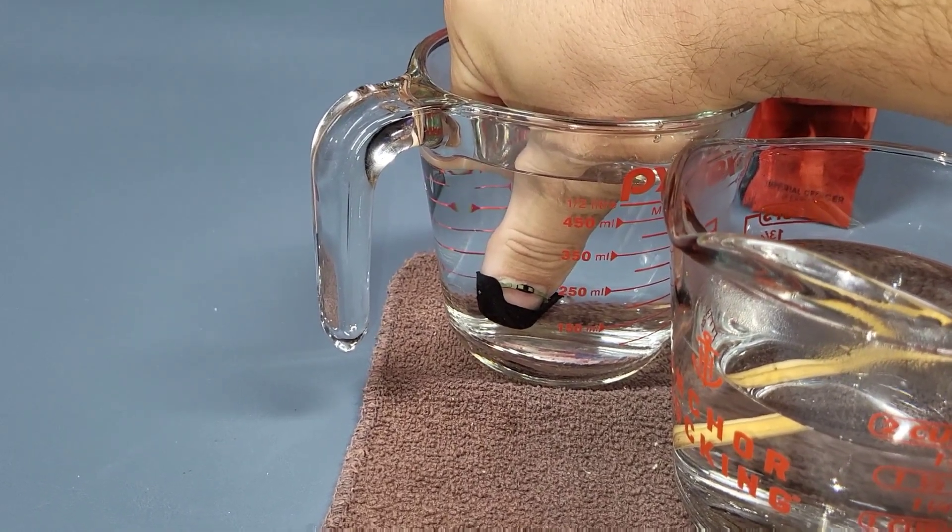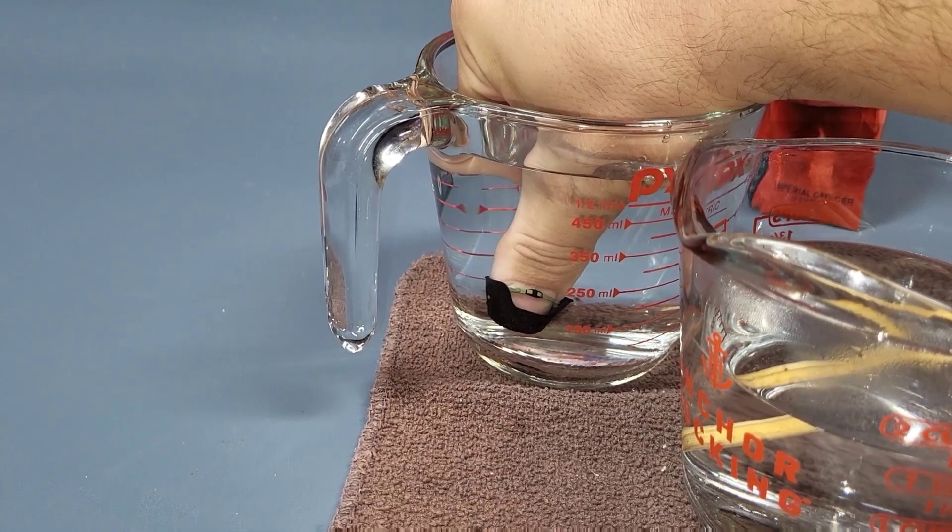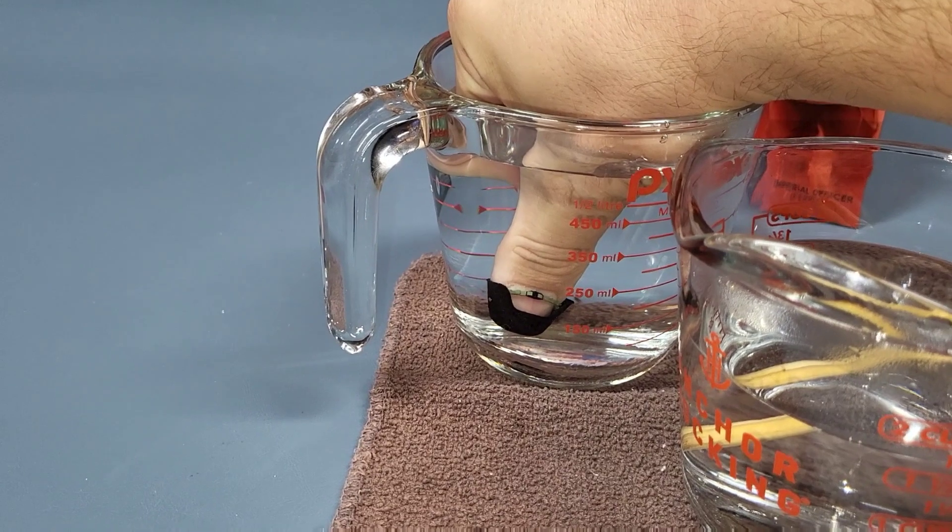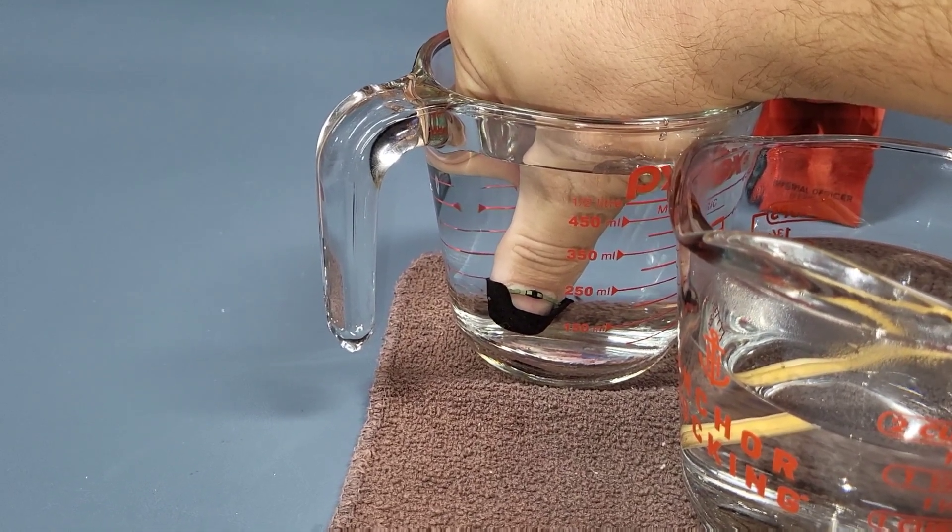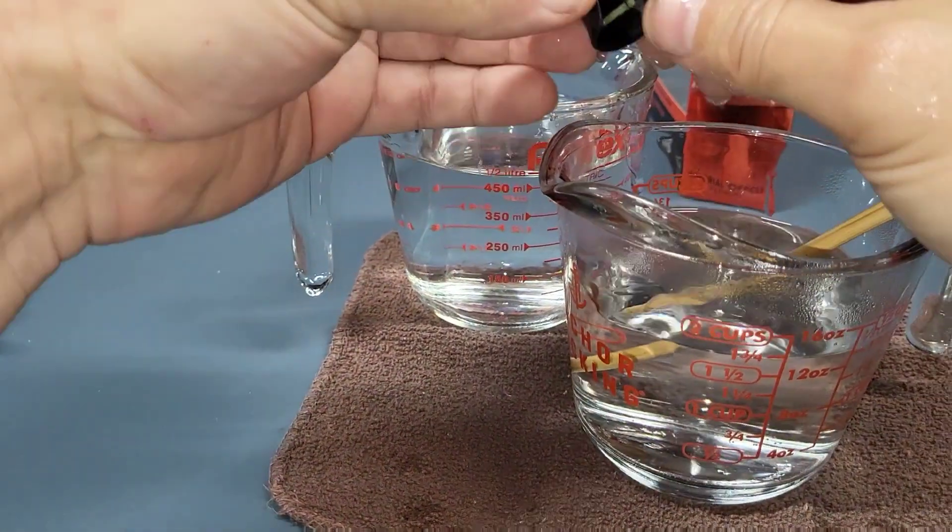And just hold it in there until you start feeling uncomfortably cold. Because it is ice water. And by the time your thumb starts getting cold, it's probably going to keep the shape at that point. So, there you go.